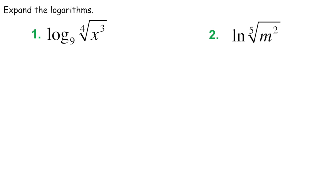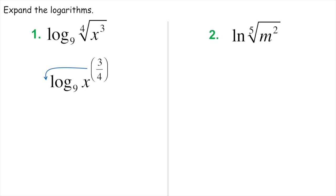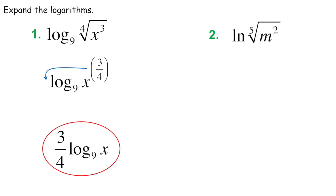These become very interesting — we're going to expand these. It's a little bit difficult because we do have an exponent and we have to identify what our exponent is. Knowing what we did in the last couple of lessons, where we can convert a radical into a fractional exponent, we take this fourth root of x cubed and convert it — this is the same thing as x to the three-fourths, where the three goes on top and the four goes on the bottom. Now that we have that, we can move that exponent way out in front: three-fourths times log base nine of x.